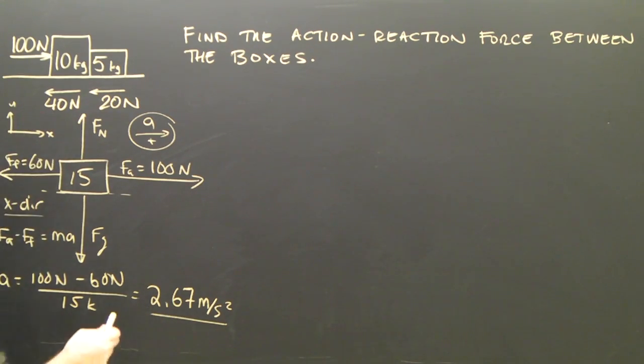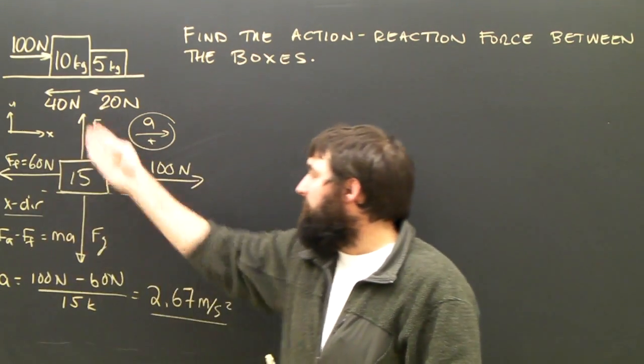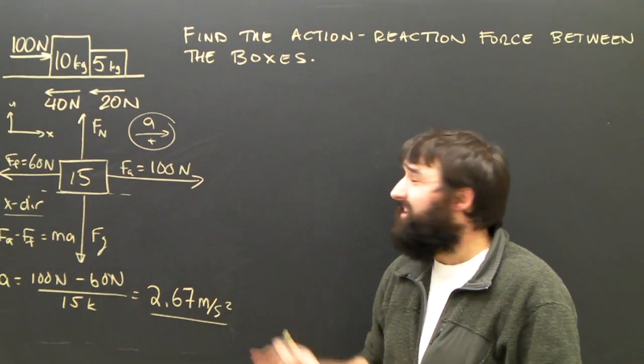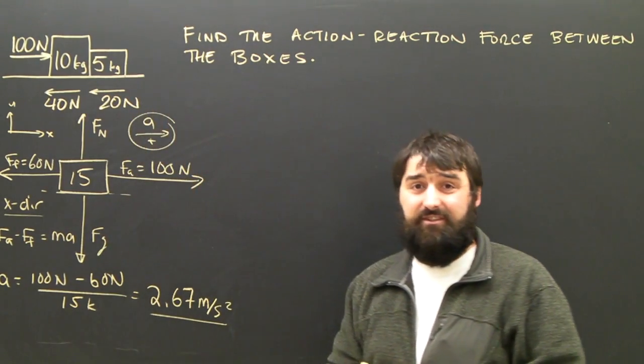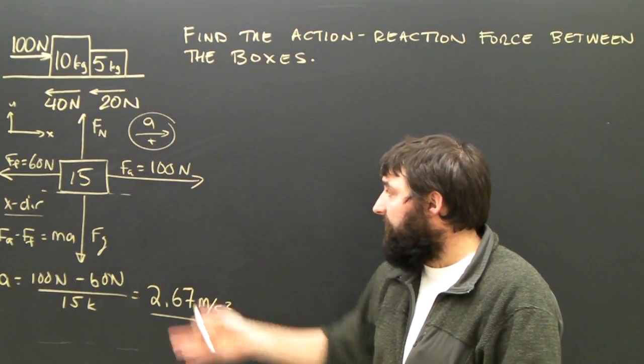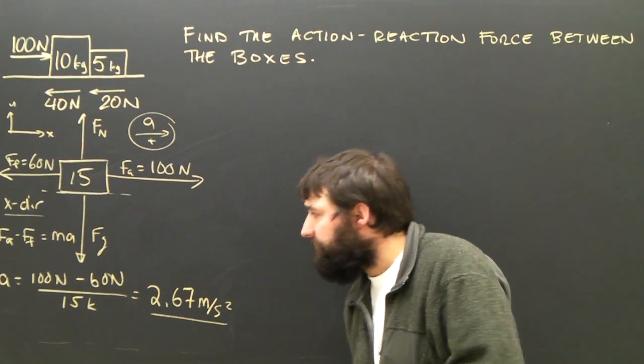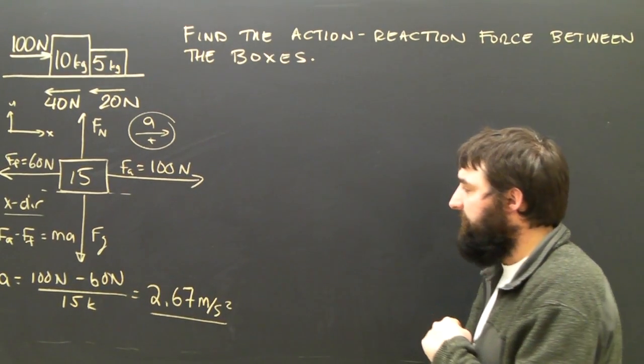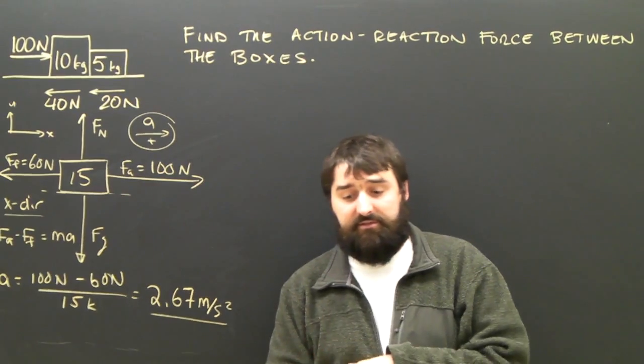In the Y direction, we can see that Fn minus Fg will equal 0. Because we've given you the friction, we don't even need to use that equation, but you should probably still write it down. So the acceleration of the boxes is 2.67 meters per second squared.